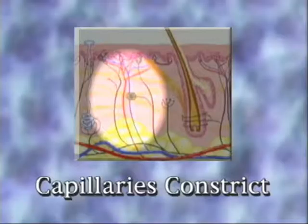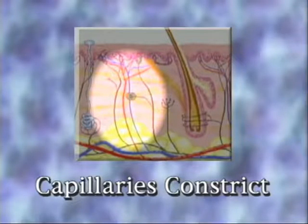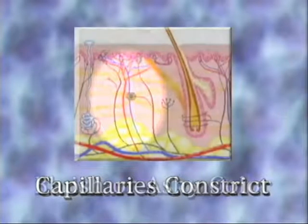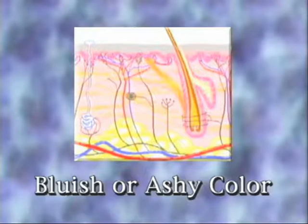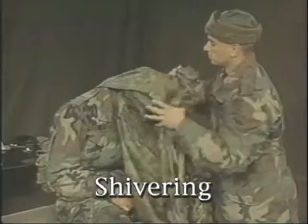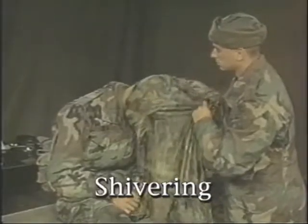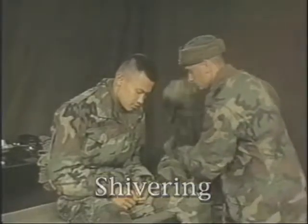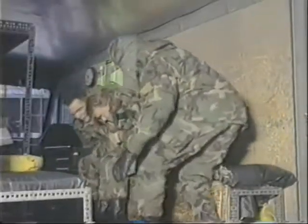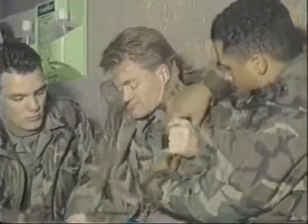Once body core temperature starts to drop, the body will begin to defend itself. Capillaries and smaller vessels near the surface of the skin will constrict to keep blood from coming in contact with the cooler skin. This gives the skin a bluish or ashy color. Shivering will usually be the next symptom. This is the body's attempt to produce heat through muscular contraction. At first, the shivering usually is mild, then it progresses to a more violent form.